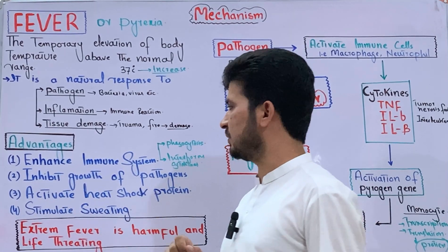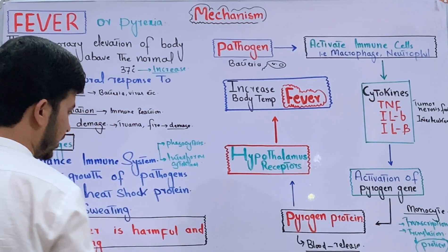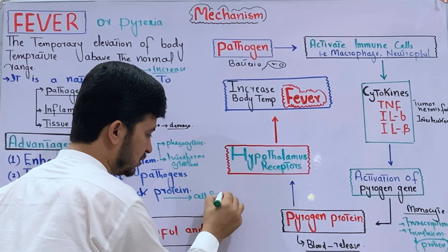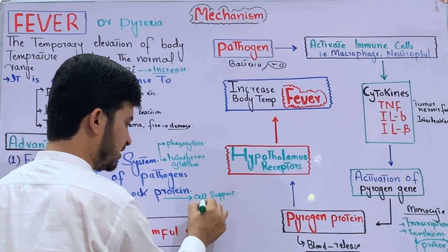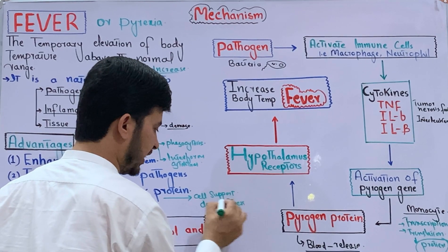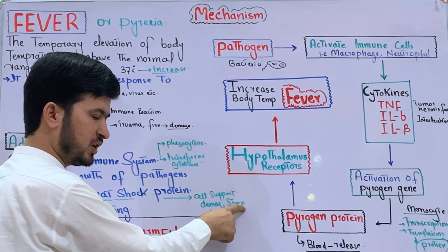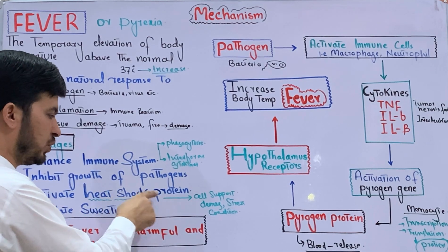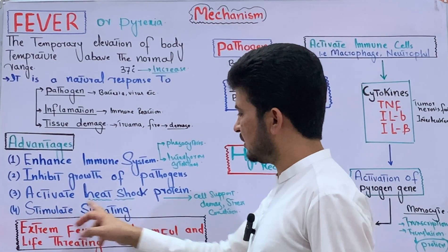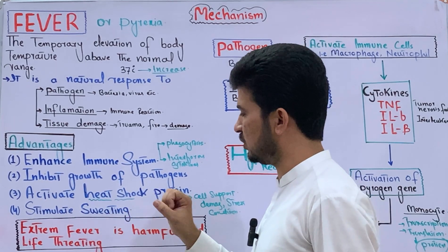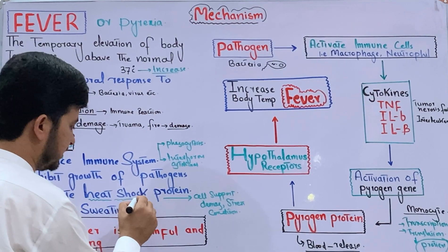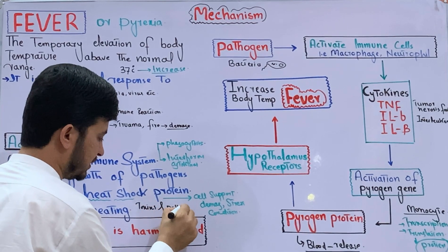Third advantage: Activate heat shock proteins. When body temperature increases, heat shock proteins are activated. These proteins provide shelter and support during stress conditions such as infection or inflammation. Fourth advantage: Stimulate sweating. When temperature increases, sweat glands produce sweat, and toxins and pathogens are excreted from the body through sweating.